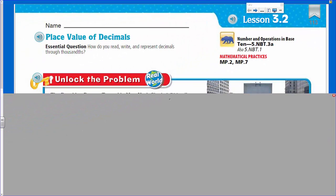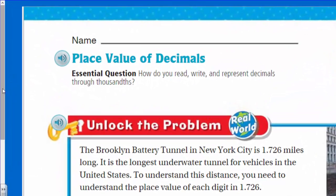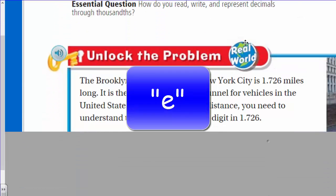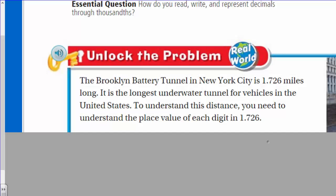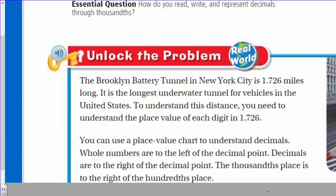Now let's go ahead and unlock that wonderful problem. I always like the real world problems here, don't you? Real world! So we're going to learn some information as we learn math at the same time. It says the Brooklyn Battery Tunnel in New York City is 1.726 miles long. It is the longest underwater tunnel for vehicles in the United States. To understand this distance, you need to understand the place value of each digit in 1.726.